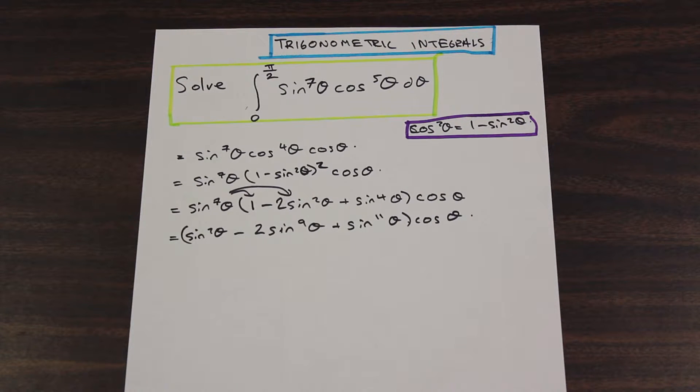Now what you could do is use substitution, use u substitution, substitute u for sine theta at this point, and you could go ahead and write out the u's and then substitute and cancel out. But here's a trick, and this trick is extremely valuable in this section.